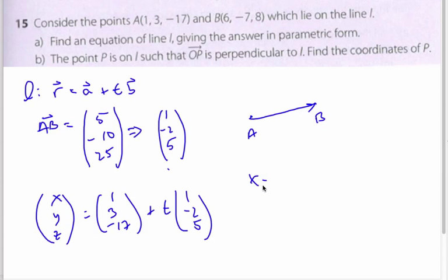In parametric form, it's actually X equal 1 plus T, Y equals 3 minus 2T, and Z equals minus 17 plus 5T. This is part A answered here.